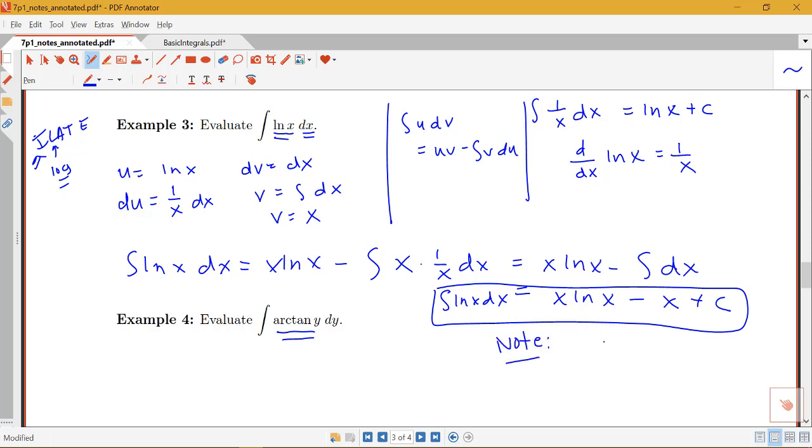So note that we do know the derivative of arctan. The derivative of arctan is 1 over 1 plus y squared. We just don't have a rule for the antiderivative of arctan. So we're going to apply integration by parts here and let u be arctan y, leaving everything that's left over here for our dv. Remember, we want everything in our integral to either be part of u or part of dv. So our du here is going to be 1 over 1 plus y squared dy, and v is equal to y.